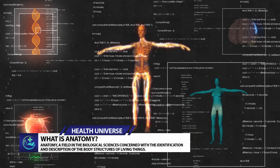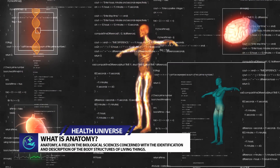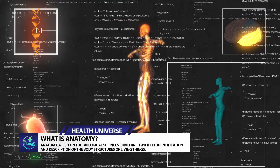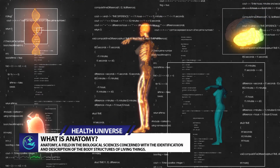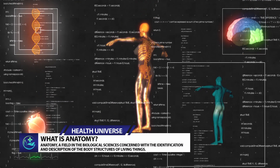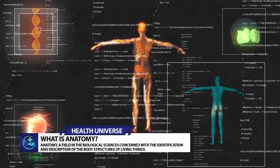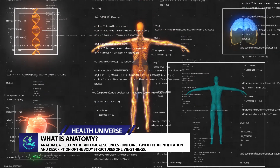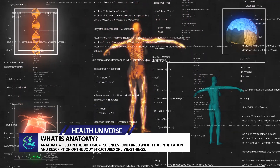Comparative anatomy, the other major subdivision of the field, compares similar body structures in different species of animals in order to understand the adaptive changes they have undergone in the course of evolution.